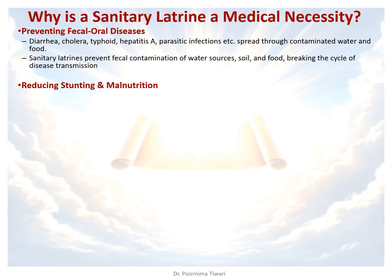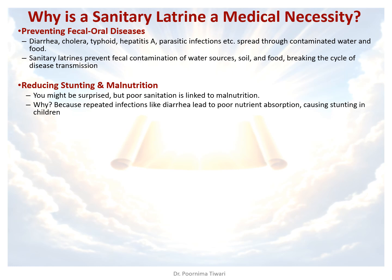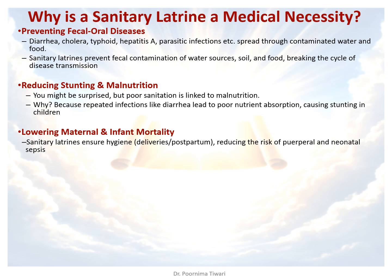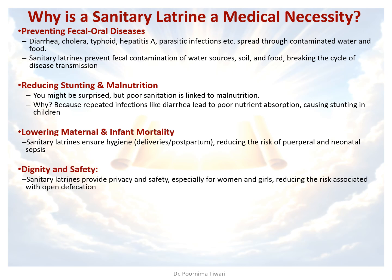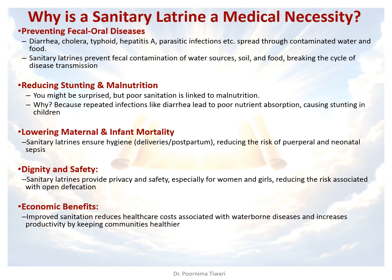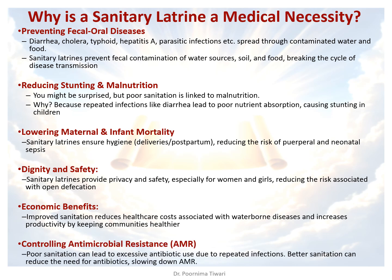Sanitary latrines also help in reducing stunting and malnutrition, because repeated infections and repeated diarrhea lead to poor nutritional status and poor nutrient absorption, ultimately causing stunting. They lower maternal and infant mortality — use of sanitary latrines during deliveries and postpartum reduces the risk of puerperal and urinary sepsis. They provide dignity and safety, especially for women, by offering privacy and reducing risk of assault. Economically, a healthier population remains working and productive, benefiting the country. Finally, fewer infections mean less antibiotic use, which helps in controlling antimicrobial resistance.